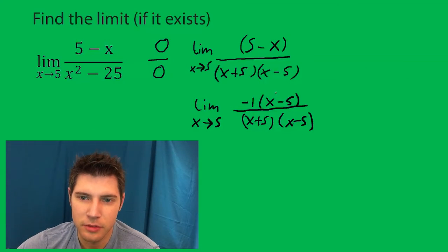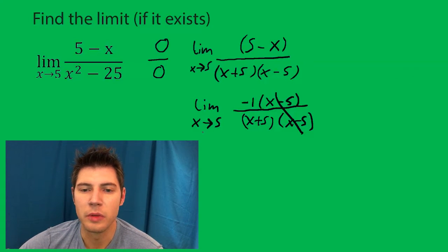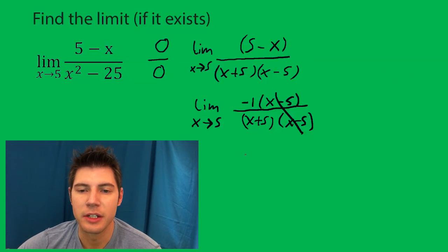Now these two cancel. And what we're left with is when we plug in 5 we get negative 1 over 5 plus 5, negative 1 over 10.